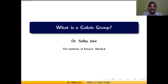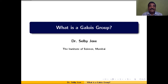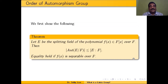In this session, we first find the size — or order — of the automorphism group in the case of splitting fields of a polynomial, and we define what a Galois group is. So, we first show the following theorem.